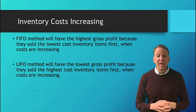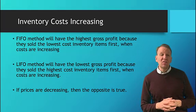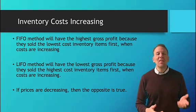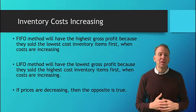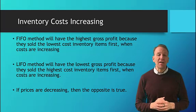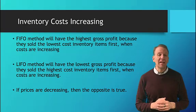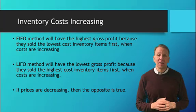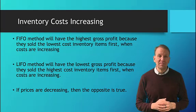If prices are decreasing, then the opposite will be true. FIFO will calculate a lower gross profit, and LIFO will calculate the higher gross profit.